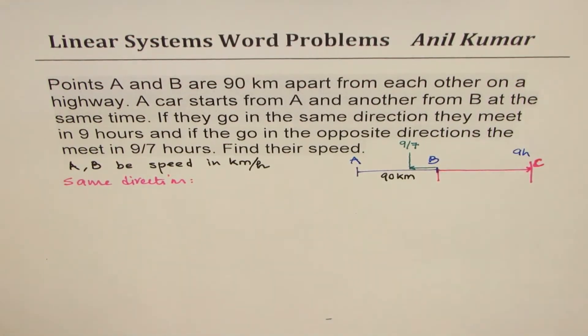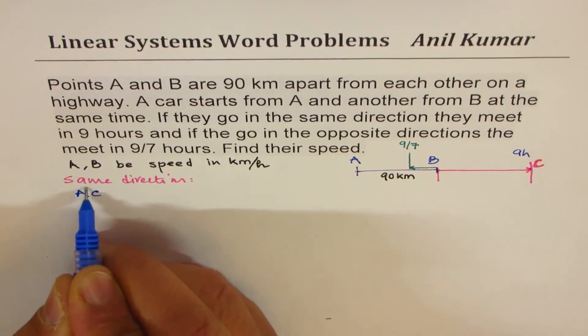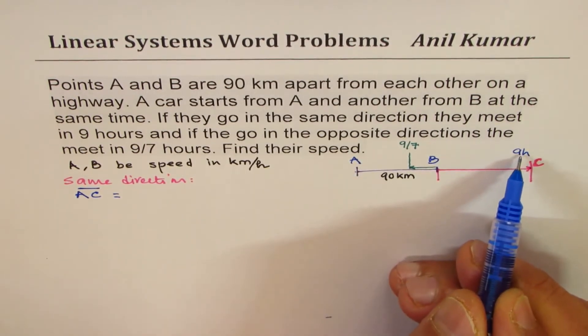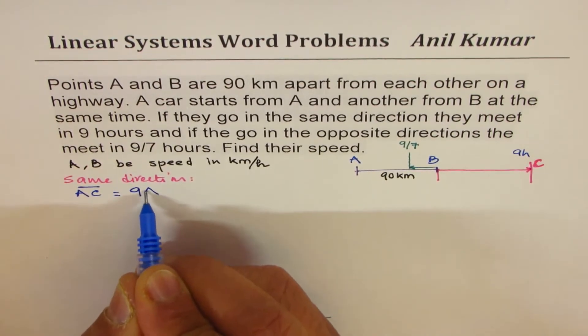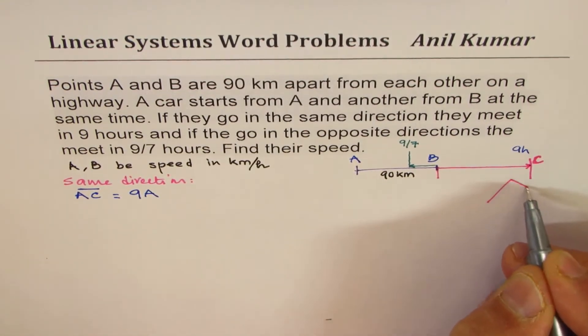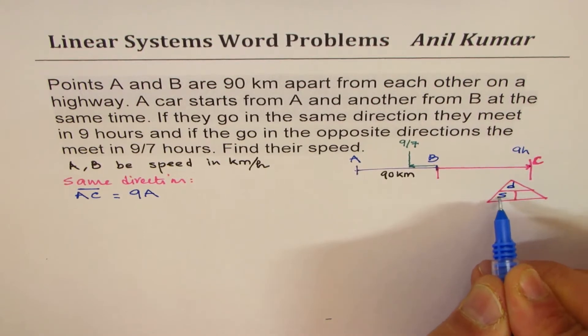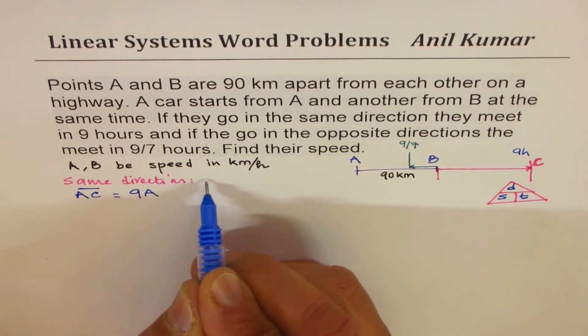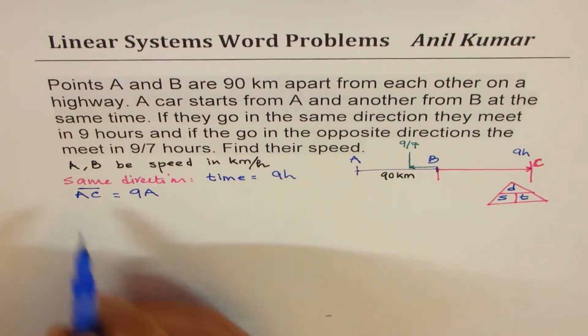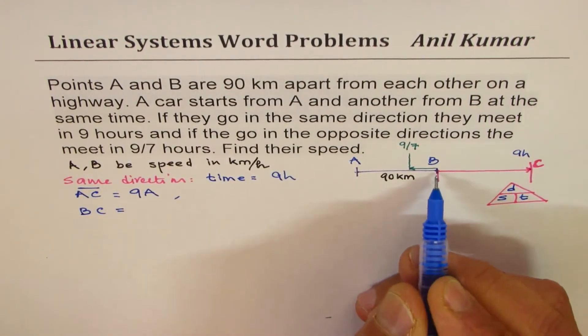In that case, you realize that the distance A to C is how much? The distance from A to C will be speed A times time taken 9 kilometers. So we can say 9A. 9 is the time. And so basically what we are doing here is we're just relating distance with speed and time. So in case 1, we have speed as A and B and time as 9 hours. So A, C is 9A and B, C will be 9B.